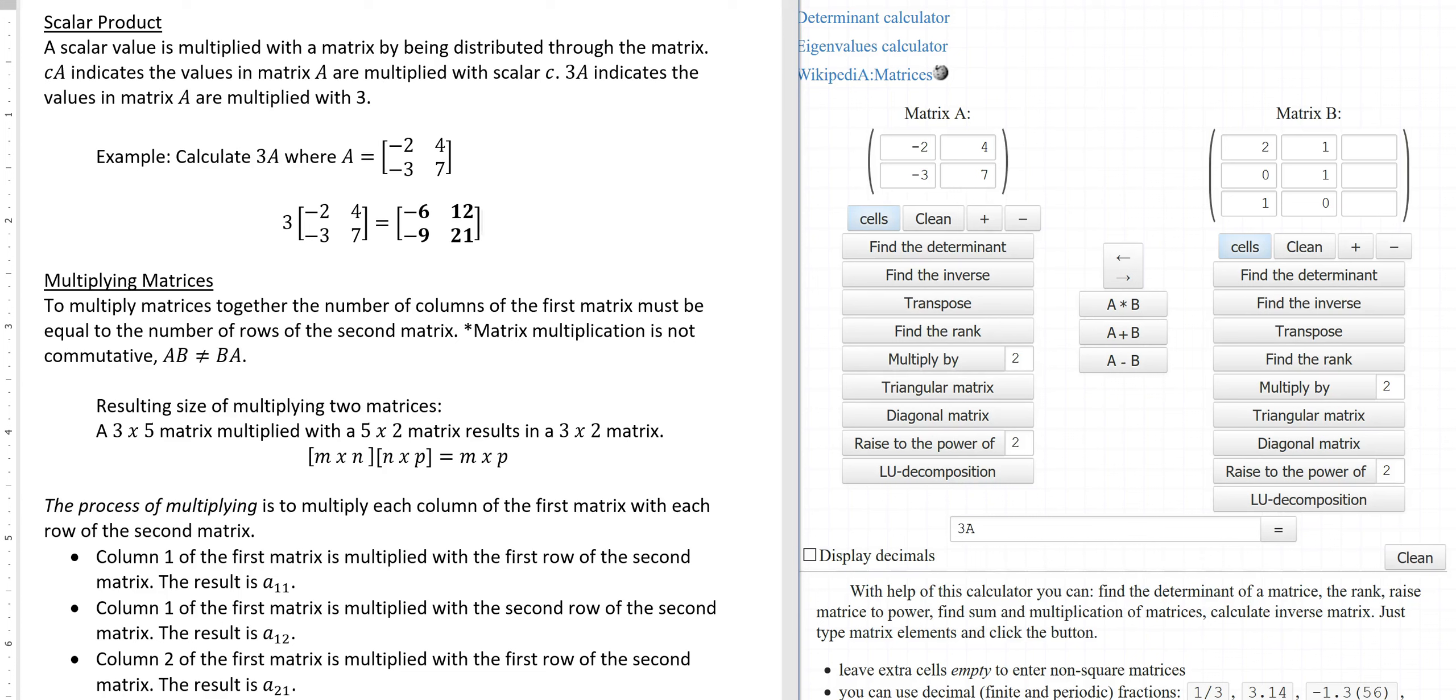Multiplication with matrices. First let's take a look at a scalar product. A scalar product is where you take a matrix and you multiply it by a constant or coefficient. A scalar value is multiplied with a matrix by being distributed through the entire matrix. C and then an A indicates the values in matrix A are multiplied with scalar C. So if I write 3A that indicates the values in matrix A are multiplied with 3.